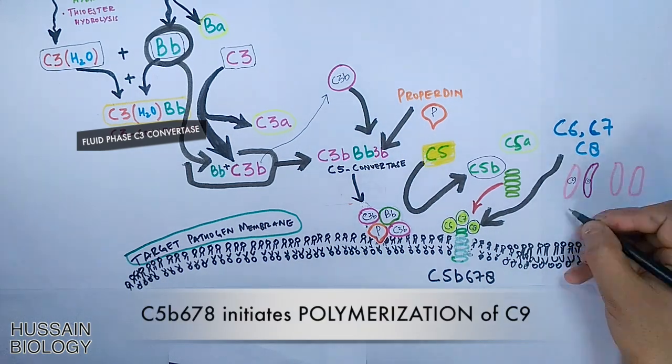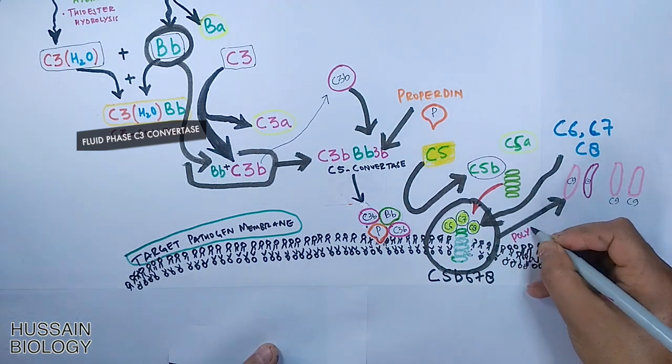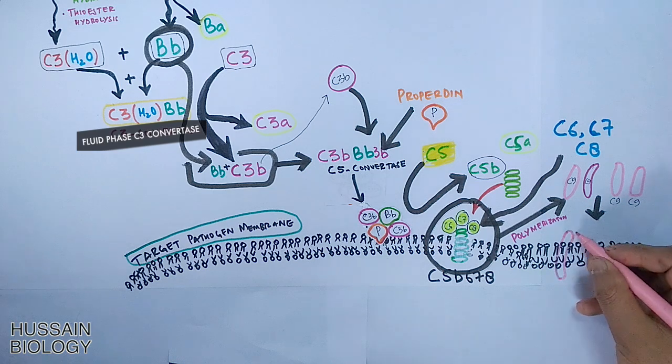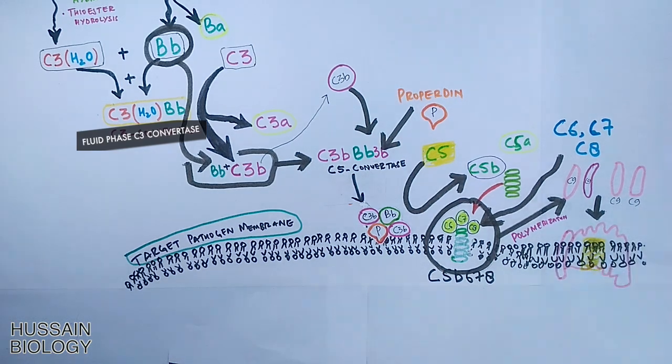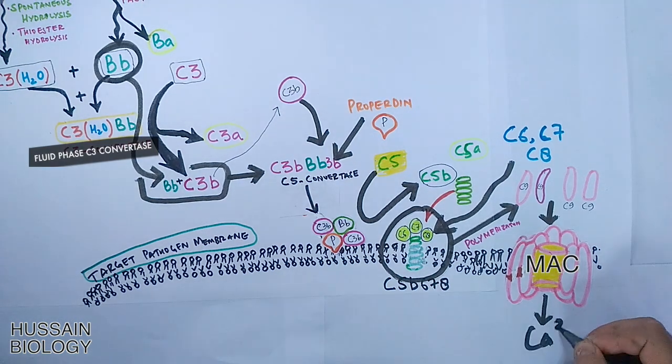So in the next step we see the C9 proteins are being polymerized into the target membrane, and eventually we get the poly C9 along with other complement proteins in the target membrane. And this eventually forms the MAC, that's membrane attack complex as shown in the diagram.